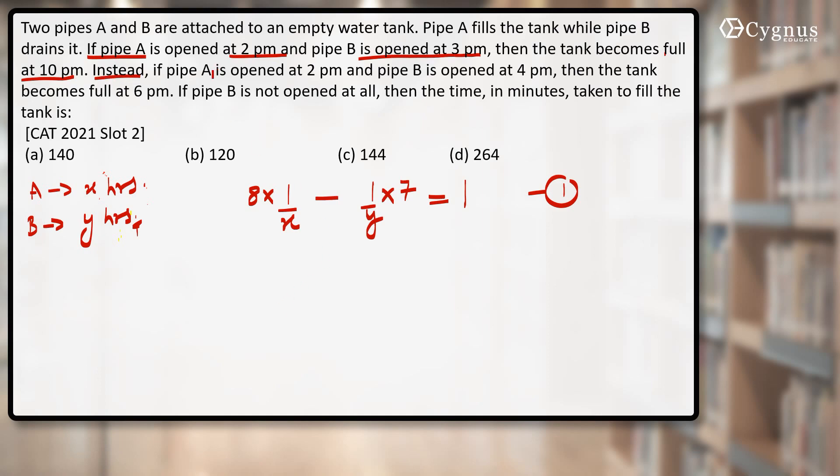Now let's look at the second case. Instead, if pipe A is opened at 2 p.m. and pipe B is opened at 4 p.m., then the tank becomes full at 6 p.m. That is, today it will take only 4 hours. So 4 hours work of pipe A will become 4 × 1/x. Pipe B was opened at 4 p.m. and it was on till 6 p.m., that is pipe B was open for only 2 hours. So 2 hours work of pipe B will become 1/y × 2. And after that the tank gets filled, that means again I can equate it with 1. This is equation number two.